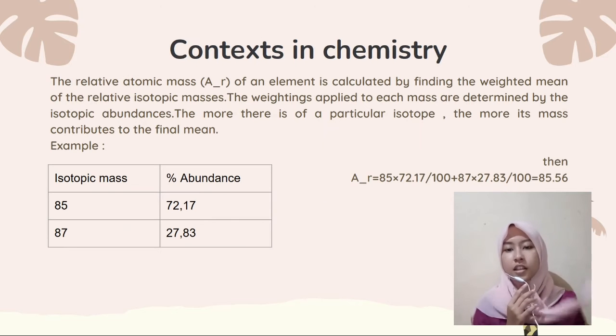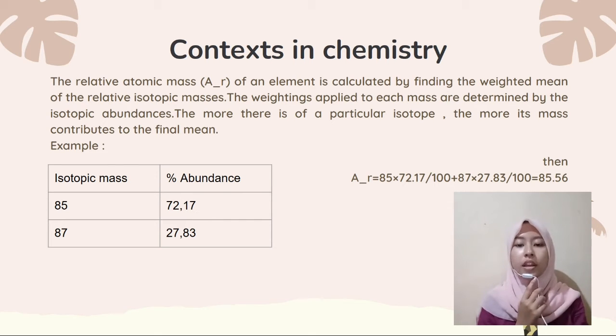Context in chemistry: the relative atomic mass (Ar) of an element is calculated by finding the weighted mean of the relative isotopic mass.